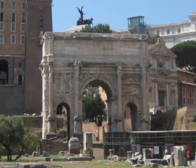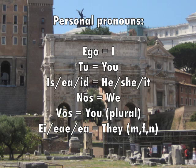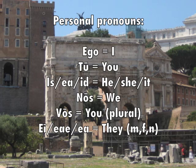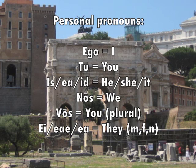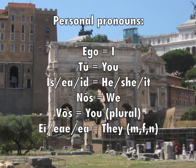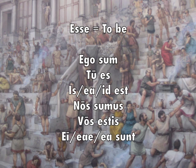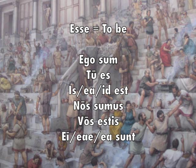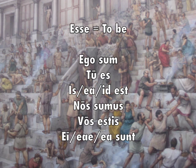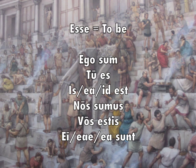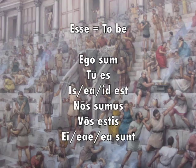Personal pronouns: ego — I; tu — you; is, ea, id — he, she, it; nos — we; vos — you (plural); ei, eae, ea — they, in masculine, feminine, and neuter. The verb esse (to be) conjugated in the present indicative: ego sum, tu es, is/ea/id est, nos sumus, vos estis, ei/eae/ea sunt.